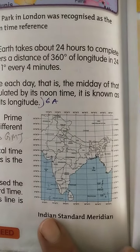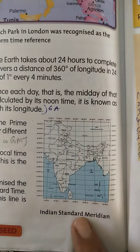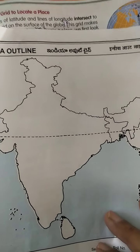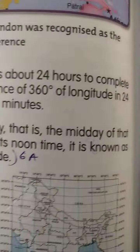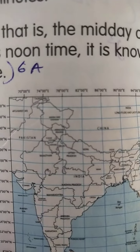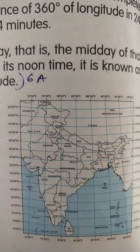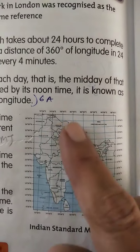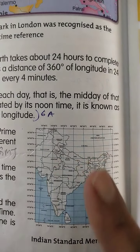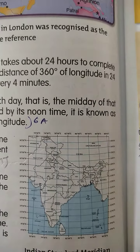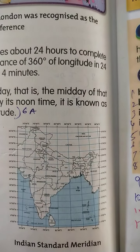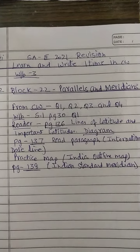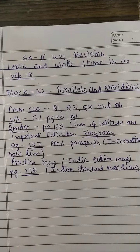This one you have to do children — Indian Standard Meridian. Take this outline map and practice all these things here. All these names of the states are there; everything you have to practice in outline map. One time I will show you. Please copy down. Okay, we'll be on our next read.